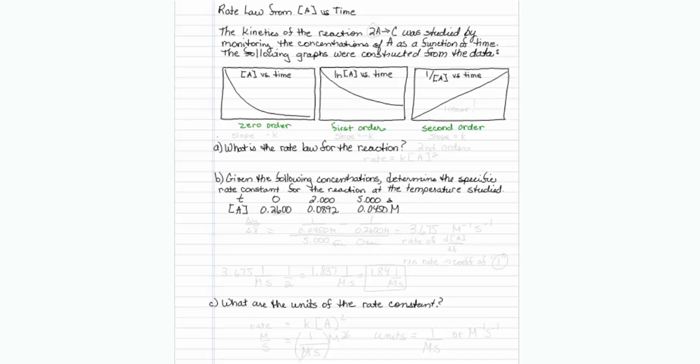And basically we just look at all three plots and see which one is linear, which is this one. So this is our answer. What is the rate law for the reaction? We know it is second order. So our rate must be equal to K times the concentration of A squared.